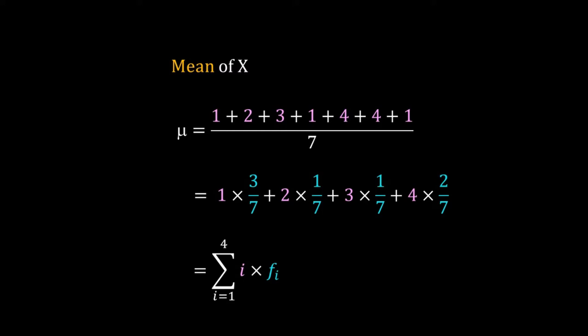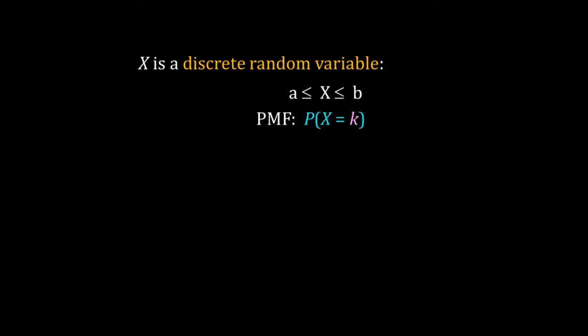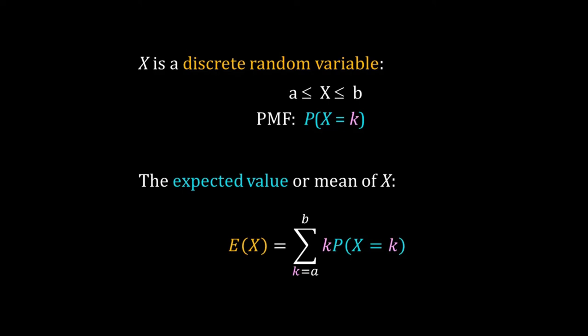Now we generalize this definition of mean and move from frequency to probability — frequency is equivalent to probability. If x is a discrete random variable between a and b, and its PMF is P(x = k), then the mean of x is the sum of k times P(k) over all possible values of k. Mean is also called the expected value or expectation of a random variable.